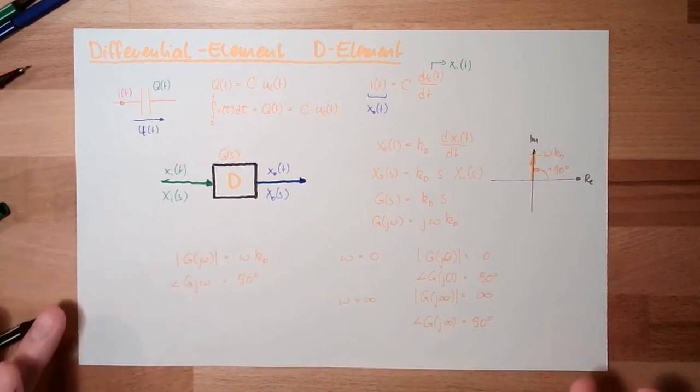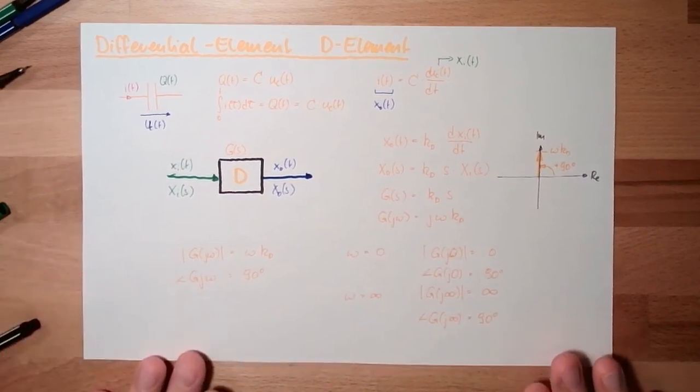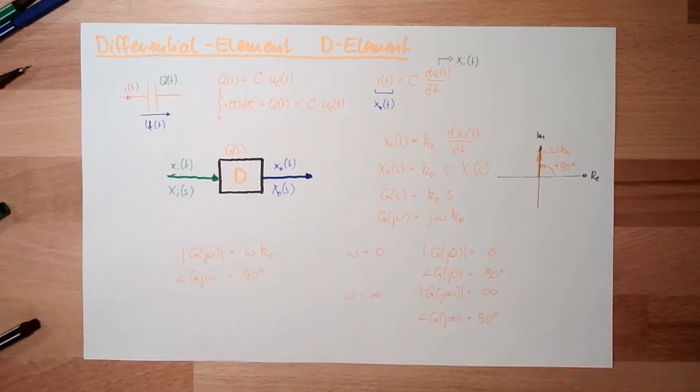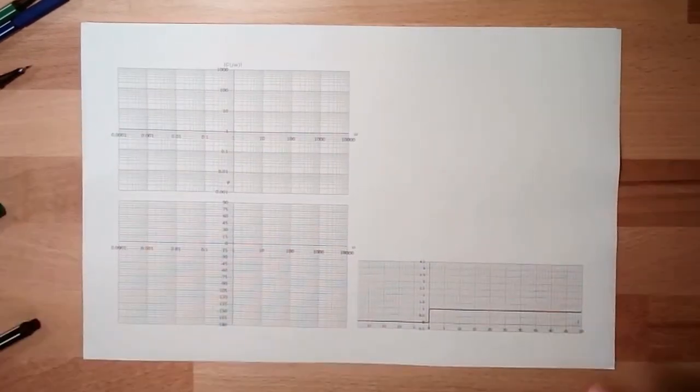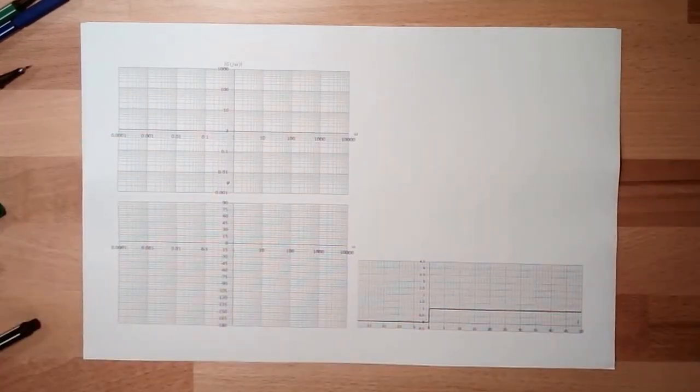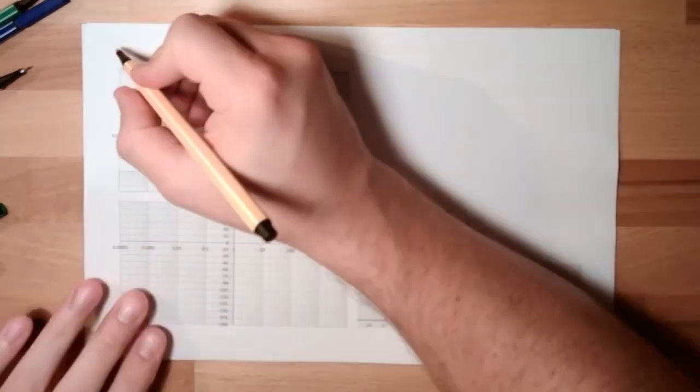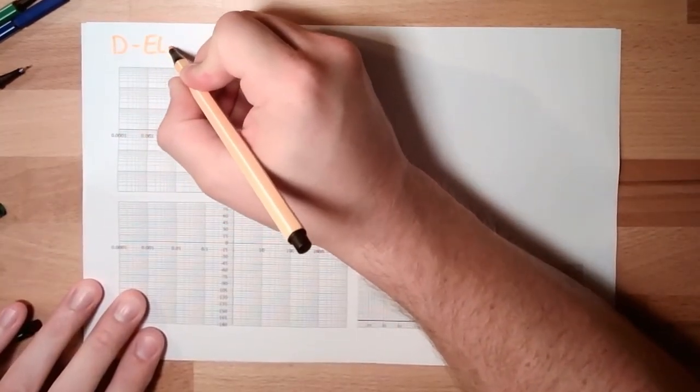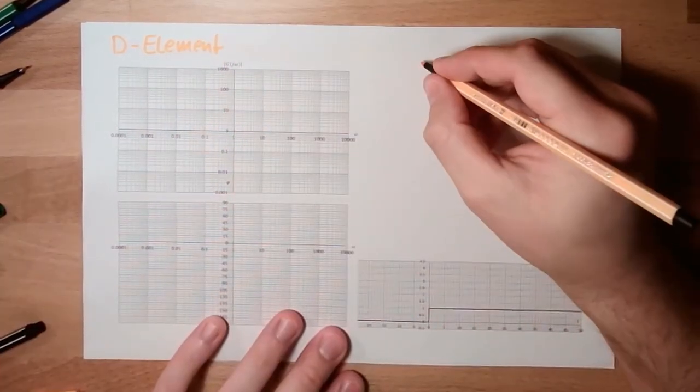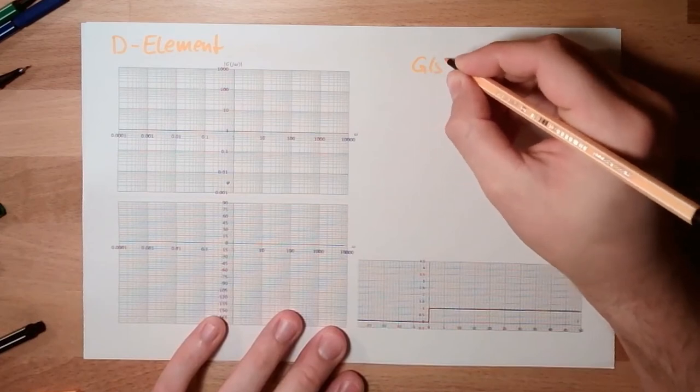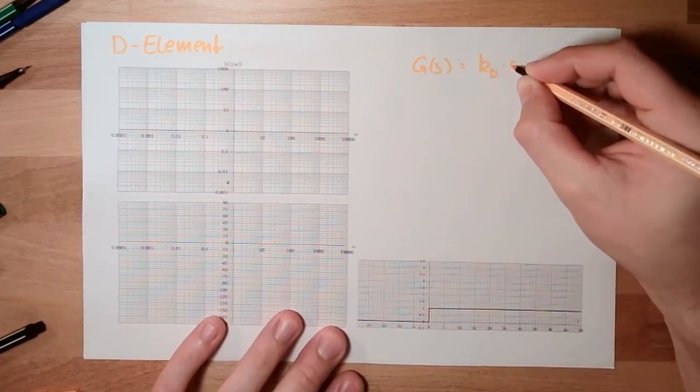OK. This is the description of the D element, the differentiator. Like I said, in reality, this is not really happening. This is the thing which comes, in my opinion, closest to it. What does it mean for the Bode plot and the step response? So, let's write it down here. D element, G S equals KD multiplied by S.